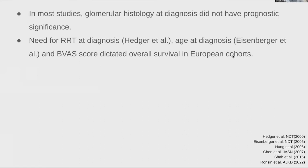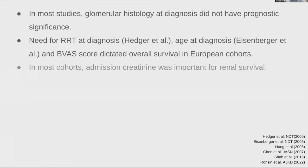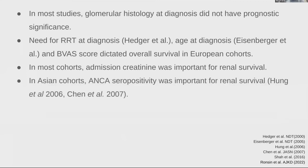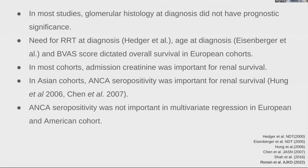More severe vasculitis predicted worse prognosis. In most cohorts, admission creatinine was very important for renal survival — higher creatinine meant worse renal survival. Only in Asian cohorts was ANCA seropositivity important for renal survival; this was not replicated in European and American cohorts.